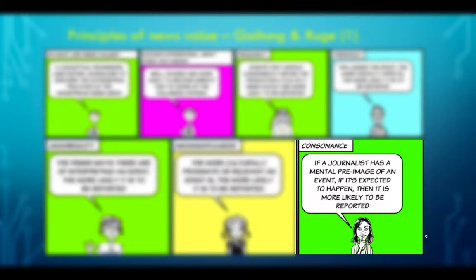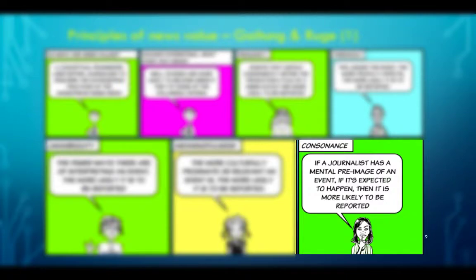Consonance: if a journalist has a mental pre-image of an event — if it's expected to happen — then it is more likely to be reported. Journalists are human beings who like schedules, routines and patterns. So if there are recurrent events, reporters are more likely to cover them because they know what to expect and can be prepared to provide better work.